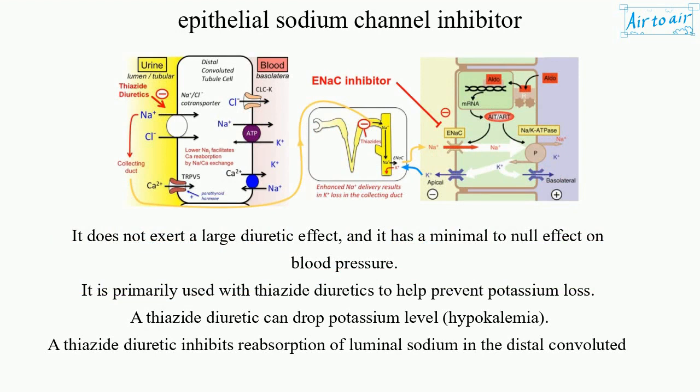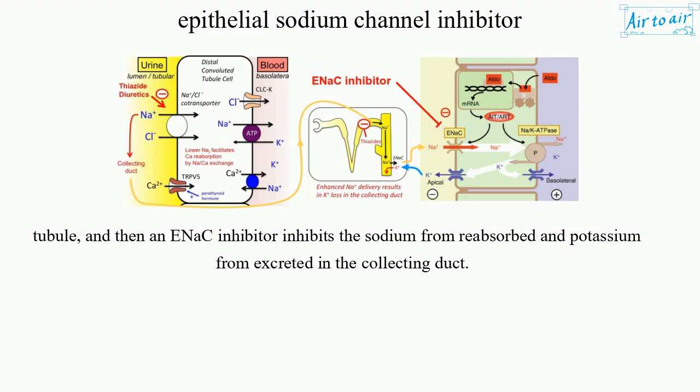It is primarily used with thiazide diuretics to help prevent potassium loss. A thiazide diuretic can drop potassium level, causing hypokalemia. A thiazide diuretic inhibits reabsorption of luminal sodium in the distal convoluted tubule, and then an ENaC inhibitor inhibits sodium reabsorption and potassium excretion in the collecting duct.